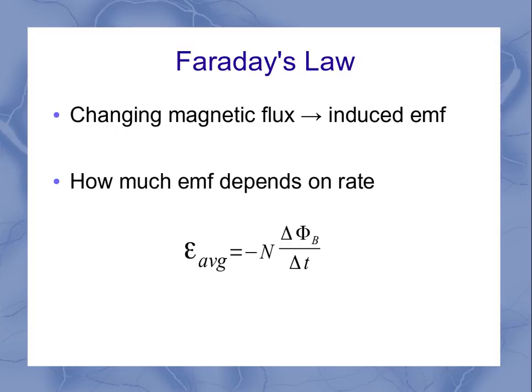And how much EMF depends on the rate. When I had the average formula, I used the delta symbol to represent my change. And so it was the delta phi per delta of t, or the change in flux divided by the change in time.